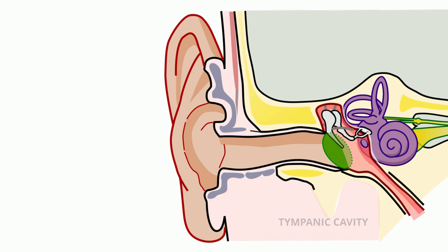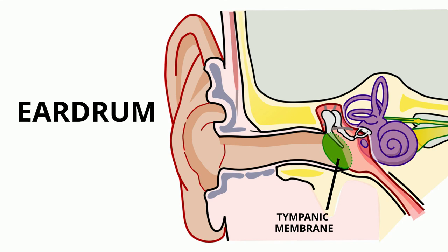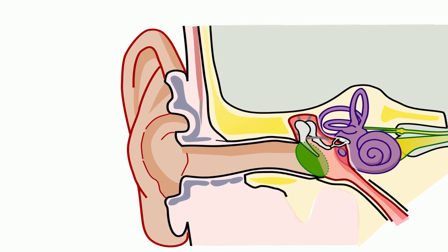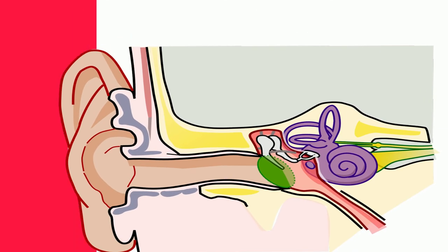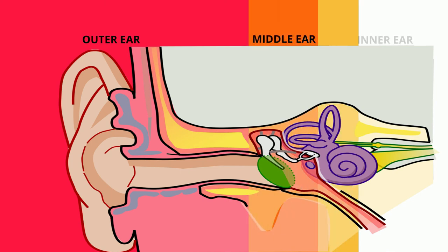Below the round window we have the tympanic cavity, and beside this cavity we have the tympanic membrane, commonly known as the eardrum. The ear is divided into three separate zones: the outer ear, the middle ear, and the inner ear.